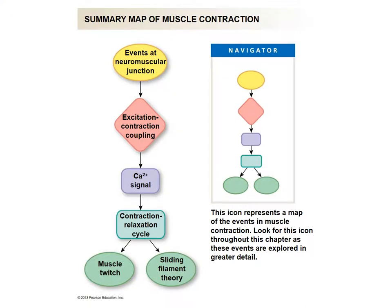Now we'll go through a summary map of muscular contraction, including the events of the neuromuscular junction, excitation-contraction coupling, and contraction-relaxation cycling. This map shows the organization of these three main events, which we will be going through in three sections.